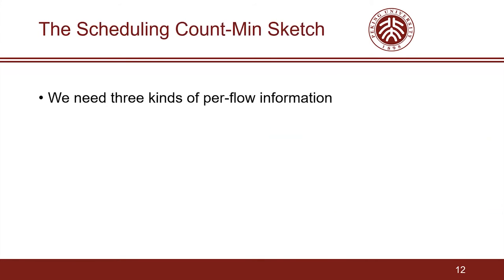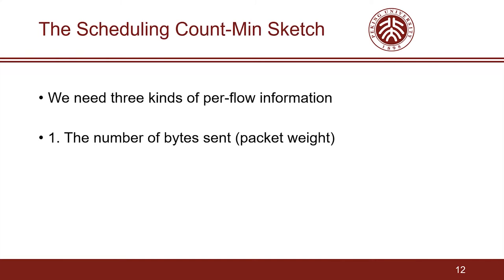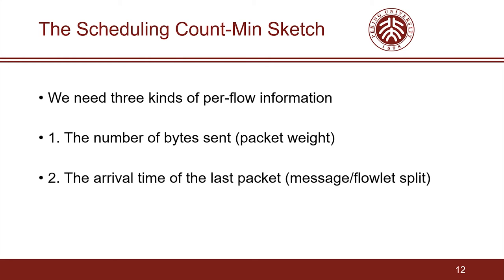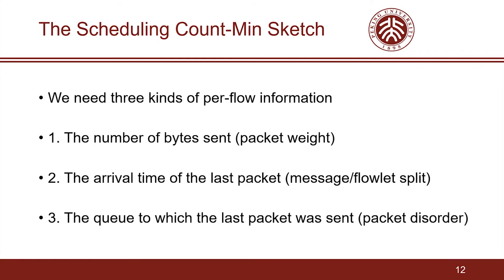To support Queue Cluster, we need three types of per-flow information. First, for each flow, we need the number of bytes sent — for scheduling tasks such as LAS, we need this information as a packet weight. Second, for each flow, we need the arrival time of the last packet; we need this to split messages to clear outdated information and split flowlets to help avoid packet disorder. Here, message refers to a reused connection, which is common in data centers. Third, for each flow, we need the queue to which the last packet was sent, to avoid packet disorder.